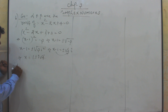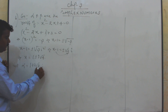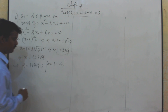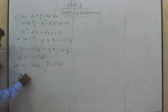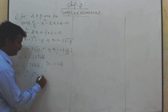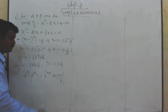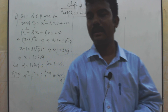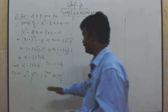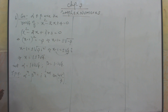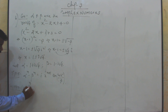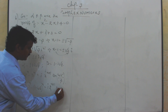So let alpha equal 1 plus i root 3, and beta equal 1 minus i root 3. What we are supposed to prove now is: alpha power n minus beta power n is equal to i into 2 power n plus 1 into sin(nπ/3). This is the proof we want, and we also need to find alpha power 9 minus beta power 9.